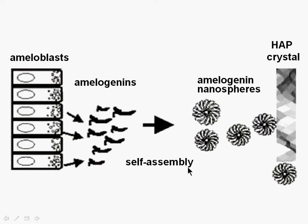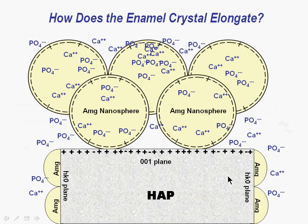Amelogenins assemble and form nanospheres. The nanospheres can bind to the hydroxyapatite crystal surface. Enamel crystals grow in an amelogenin protein matrix. The amelogenin nanospheres have charged surfaces resulting from their C-termini.